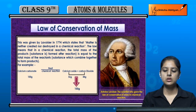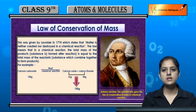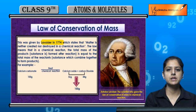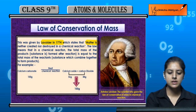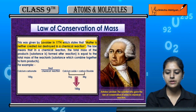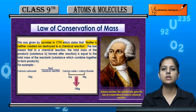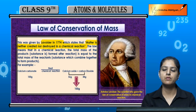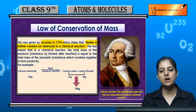Our first topic is the Law of Conservation of Mass. This law was given by Lavoisier in 1774. It states that matter is neither created nor destroyed in a chemical reaction — matter does not take a new form, nor is existing matter destroyed.